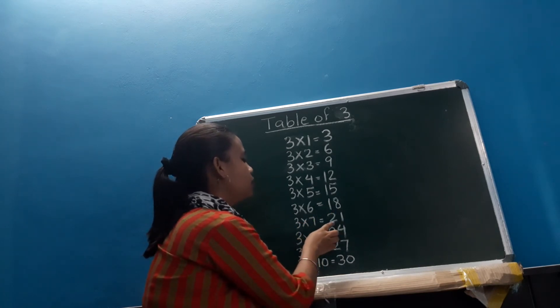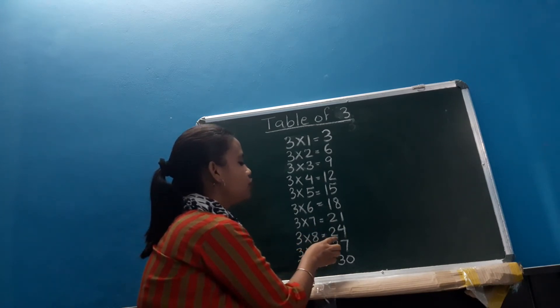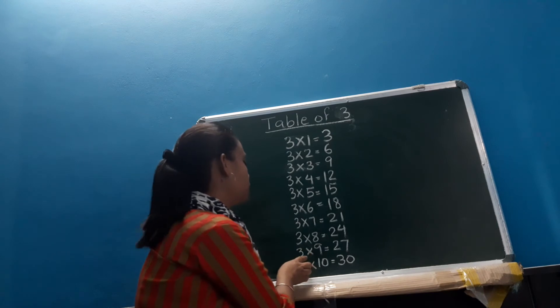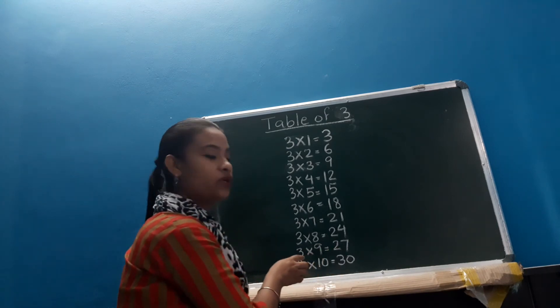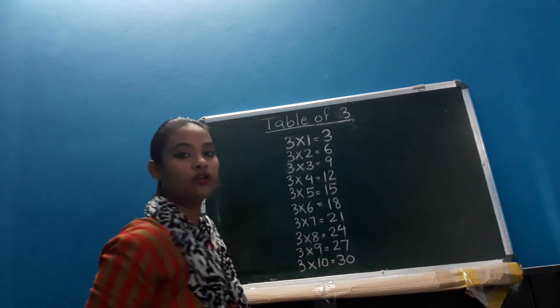3 6's are 18, 3 7's are 21, 3 8's are 24, 3 9's are 27, and 3 10's are 30.